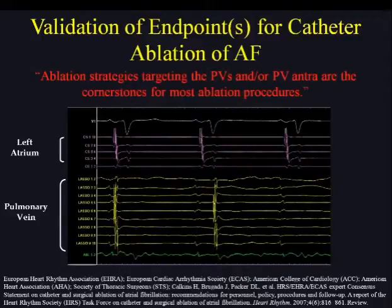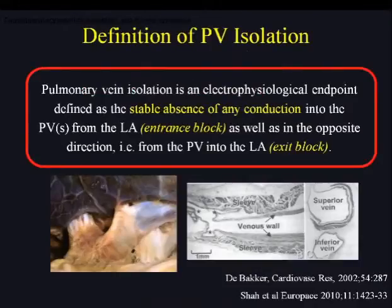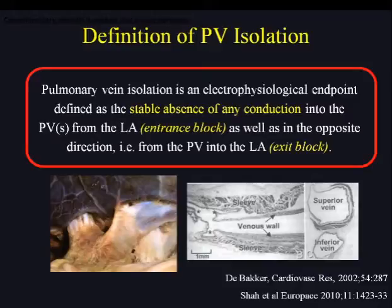I cannot stress enough how paramount electrical isolation is as an endpoint of any catheter ablation for atrial fibrillation, either paroxysmal or persistent. Electrical isolation of the pulmonary veins has a clear definition: it is the stable absence of any conduction into the PVs from the left atrium — being entrance block — as well as in the opposite direction, from the PV into the left atrium, which is exit block.